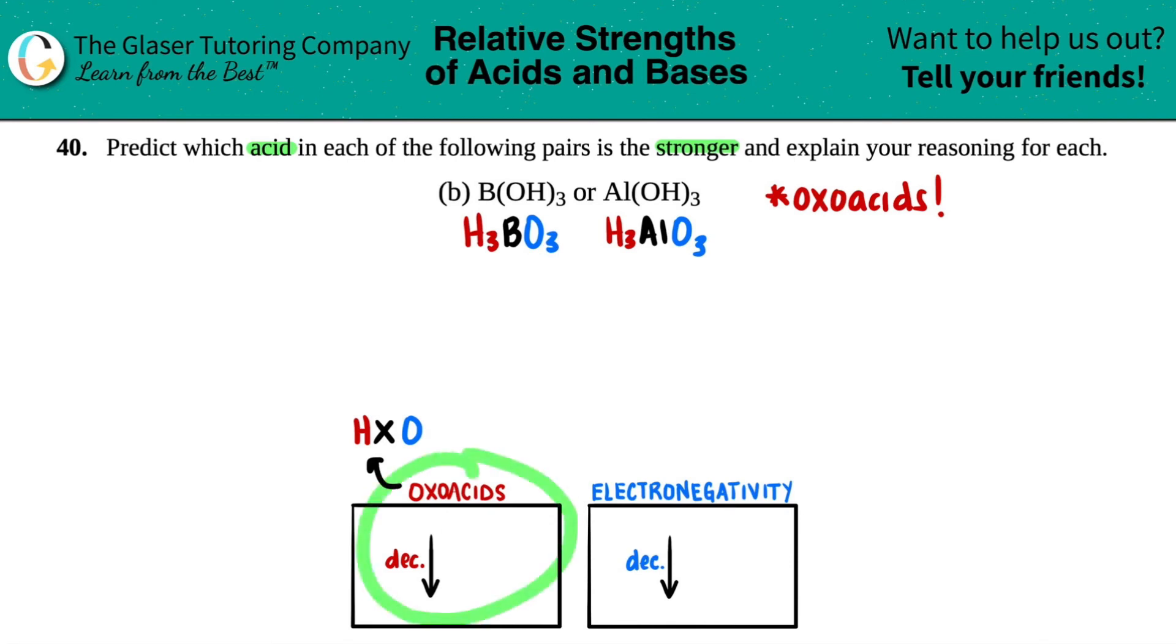So when you're talking about the trend of the oxoacid, all we have to look at is the middle element. So in this case, we're looking at boron versus aluminum.